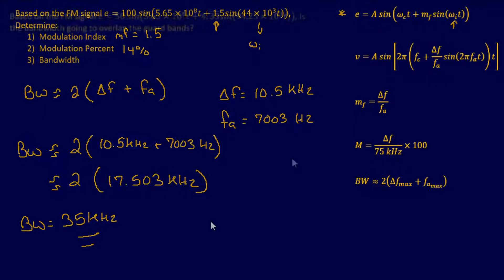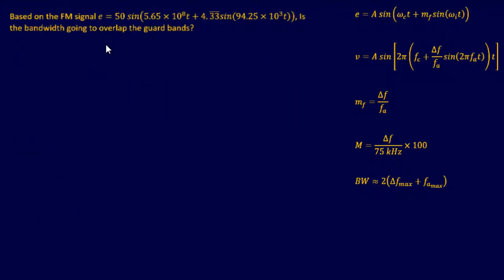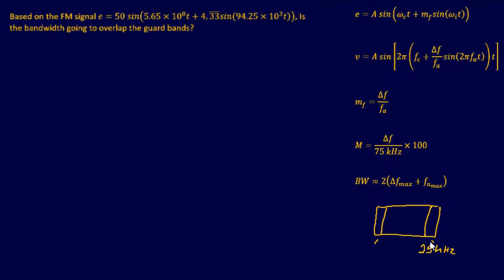Let's do one more problem. Based on the FM signal shown, is the bandwidth going to overlap the guard bands? Every station has guard bands on the upper and lower side consisting of 25 kilohertz each, leaving approximately 150 kilohertz of usable bandwidth. So if your bandwidth exceeds 150 kilohertz, you're going to overlap and hit some of these guard bands.